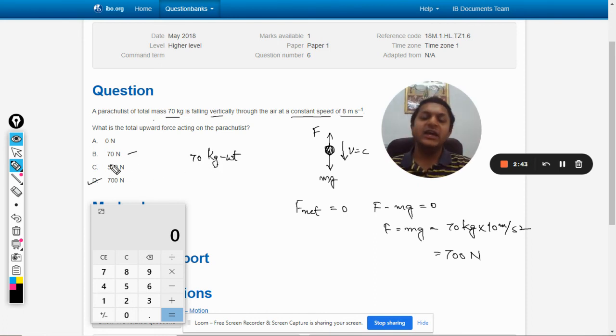Kg weight means it is equal to the weight of 70 kgs. So that is another unit, so be very careful about the units. All the best, bye.